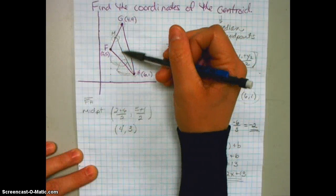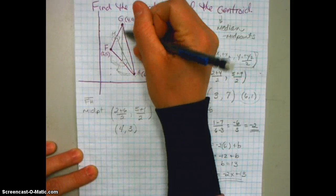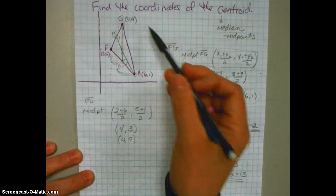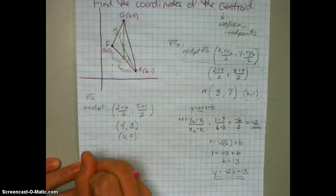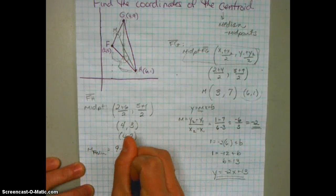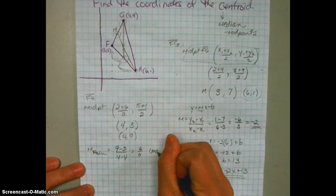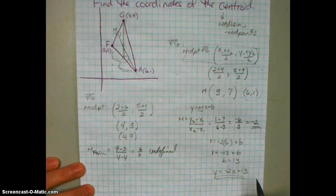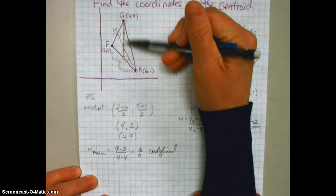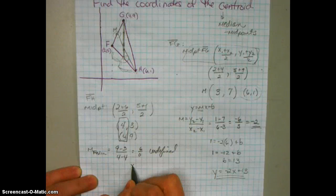So I'm working with the points (4, 3) and G at (4, 9). Finding the slope: (9 − 3)/(4 − 4) = 6/0 — that's undefined! Undefined slope means a vertical line, where all X values are equal. You can see on the graph that both points share the same X value. So the equation of this median is simply X = 4.